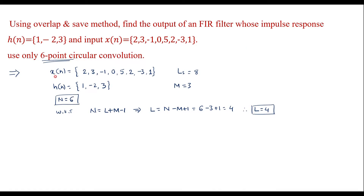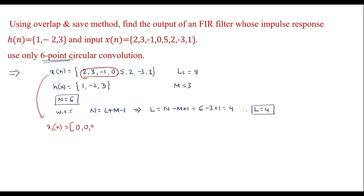In the overlap and save method, the x of n sequence is divided into small blocks. The first block x1 of n consists of first M minus 1 zeros — here M is 3, so that is 2 zeros — followed by L samples of x of n. Since L equals 4, we take the first 4 samples: 2, 3, minus 1, 0. So x1 of n is: 0, 0, 2, 3, minus 1, 0.